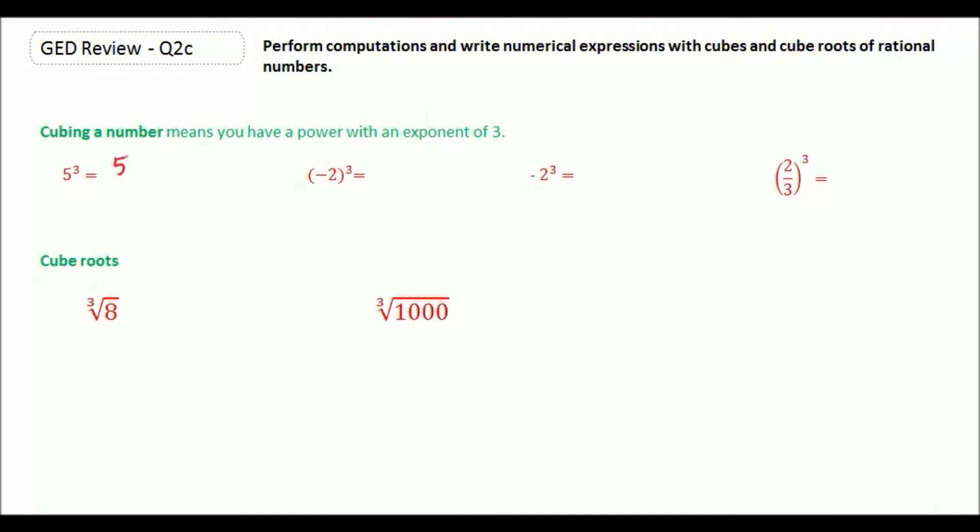So 5 cubed would be 5 times 5 times 5, which is 125.